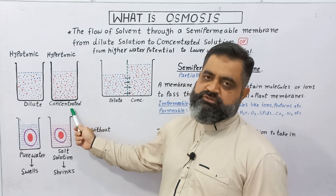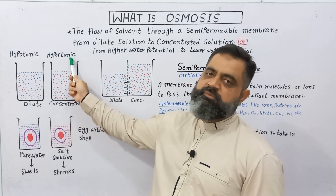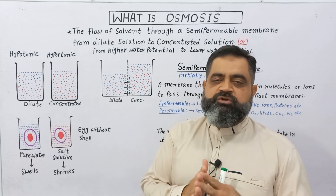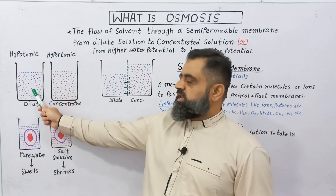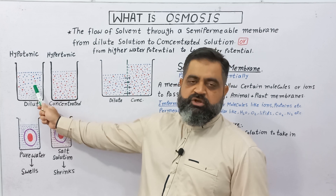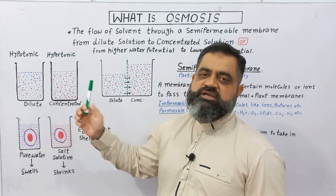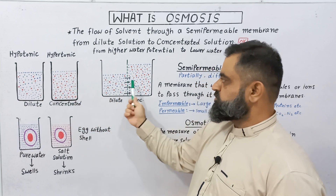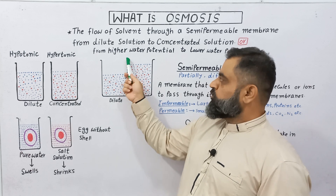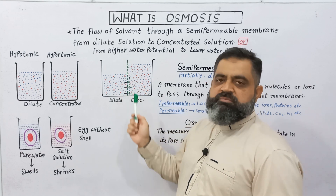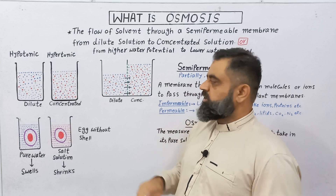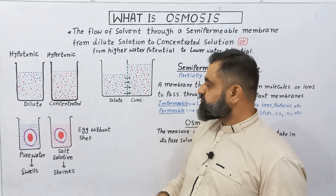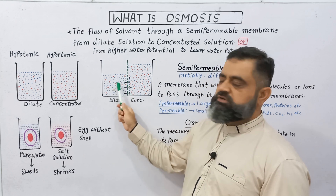In another beaker I have taken another amount of water or solvent and dissolved certain solutes like salt or sugar to make it a concentrated solution. The concentrated solution is usually known as hypertonic. Now I am going to put these two solutions together, but with a semi-permeable membrane or partially permeable membrane placed in between them. The dilute solution has higher water potential and the concentrated solution has lower water potential.